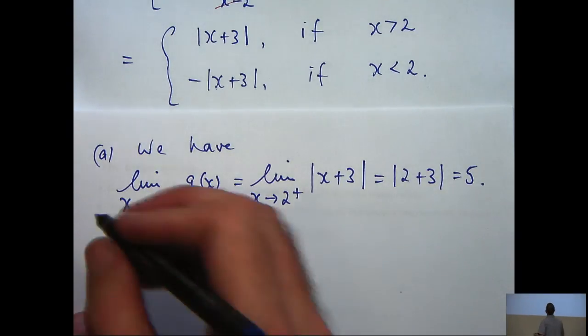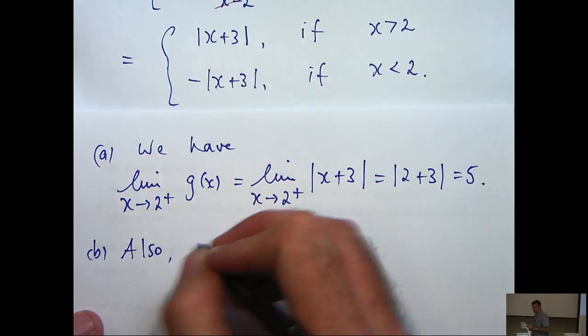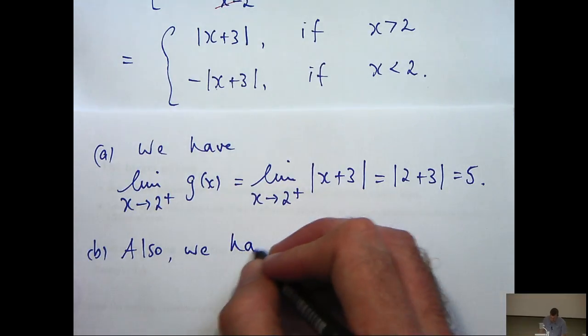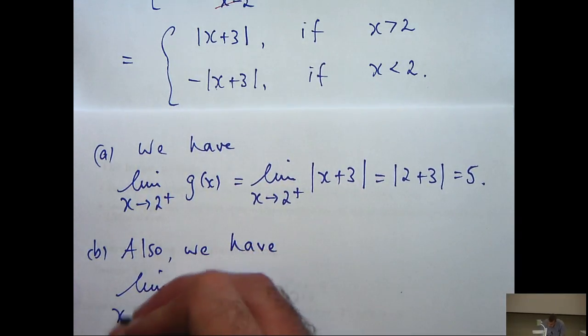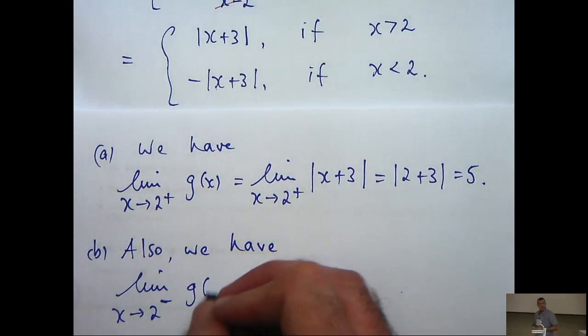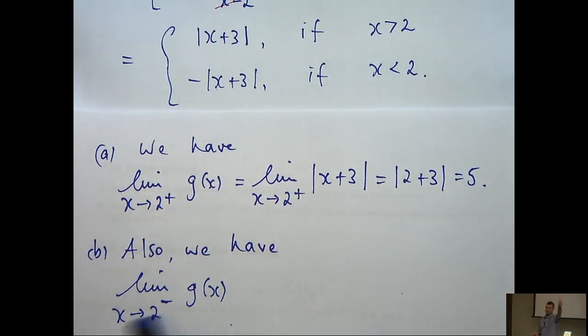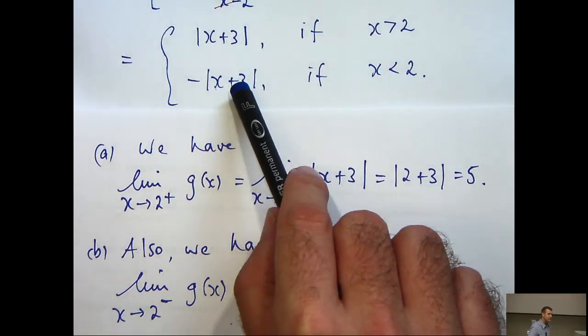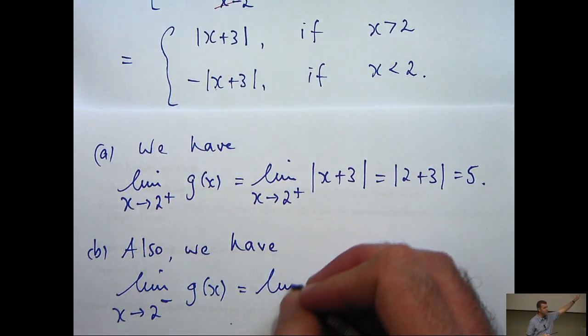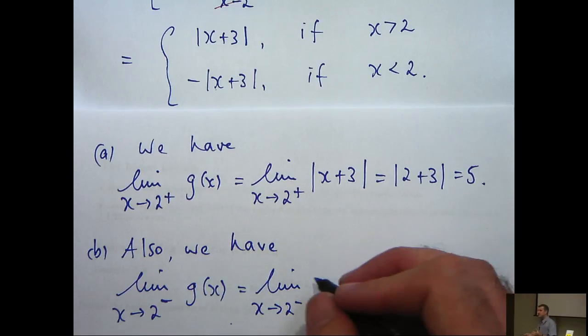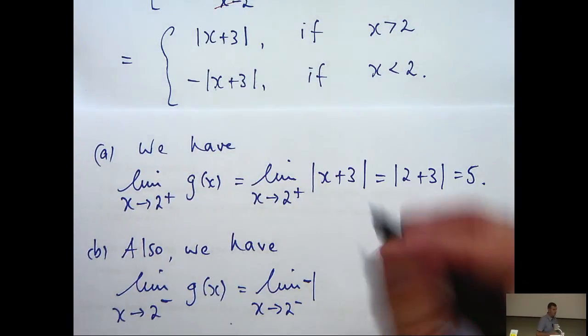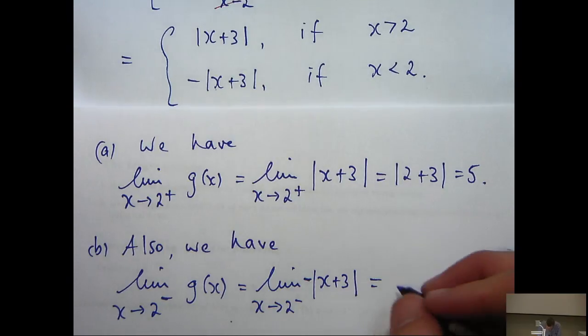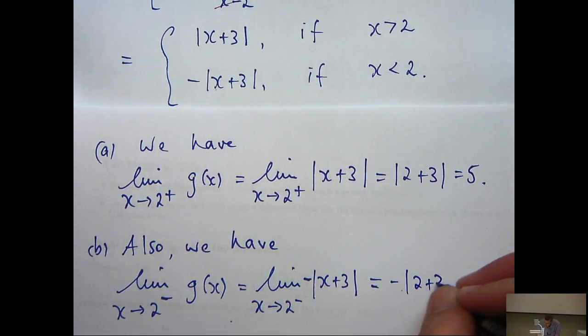Okay, in part b, we're asked to calculate the limit here, limit of g as x approaches 2 from the left. So this means that x approaches 2 from the left means x is strictly less than 2. So this would be the correct definition of g for this region. Okay, so this is just going to be similar up here. We get minus 5.